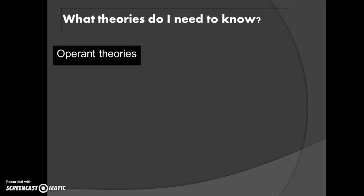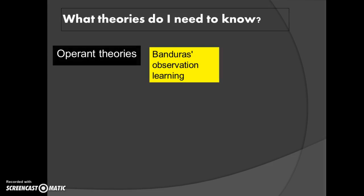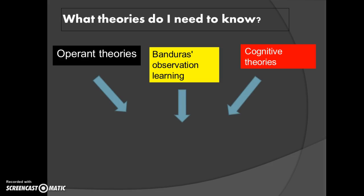What theories do you need to know? These are the operant theory, Bandura's observational learning theory, the cognitive theory, and also how each one of these are supported by reinforcement. We're going to break each one of these down, and then look at a 10-mark question on one of those a little bit later on.